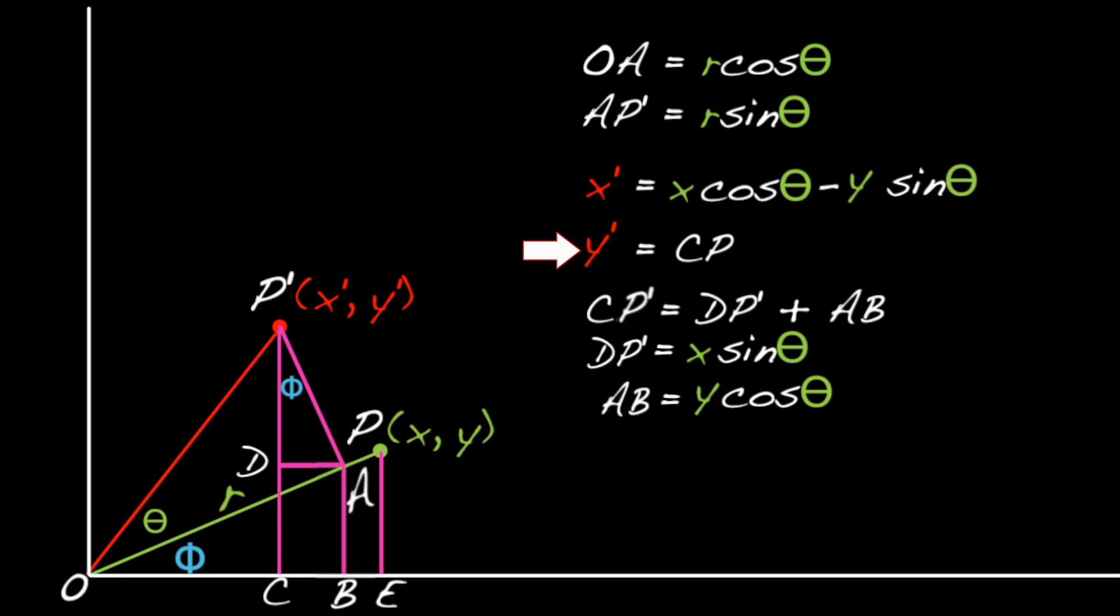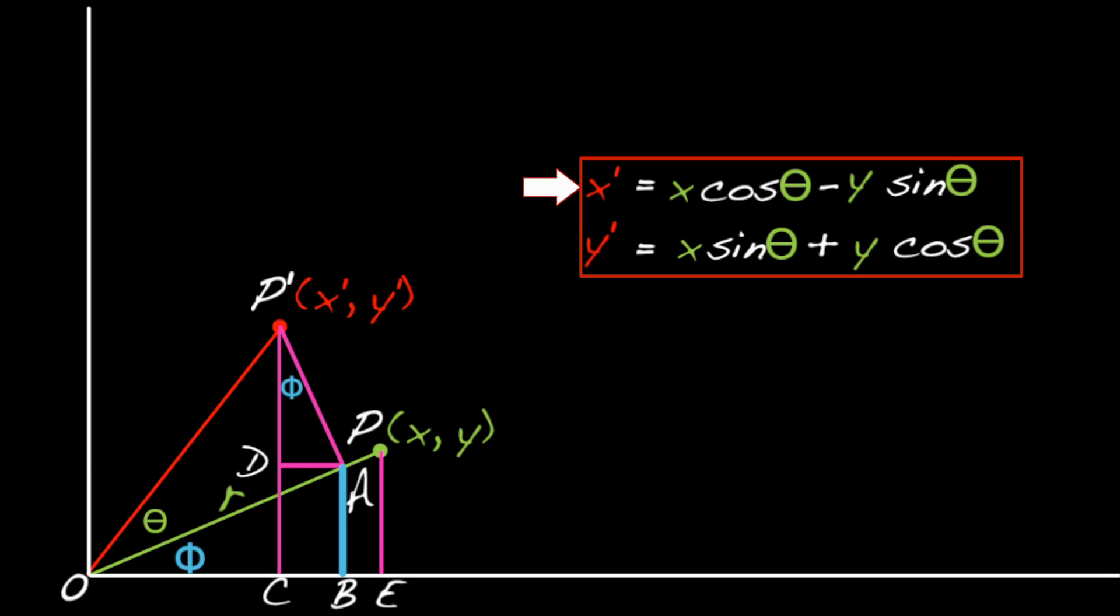Putting this together, Y prime equals X sine theta plus Y cosine theta. Yay! We did it! In summary, X prime equals X cosine theta minus Y sine theta. And Y prime equals X sine theta plus Y cosine theta.